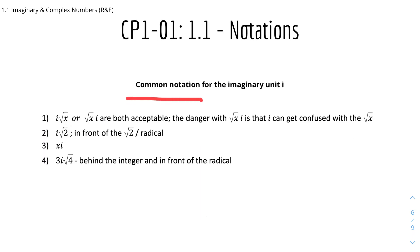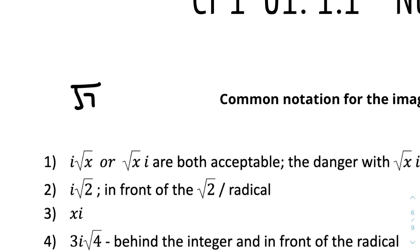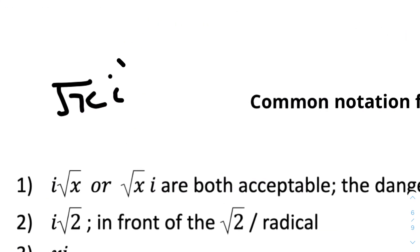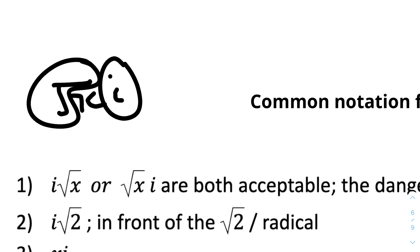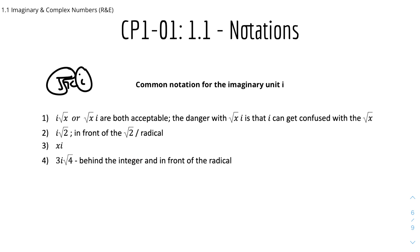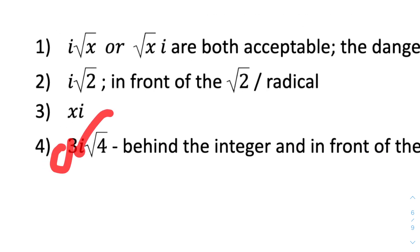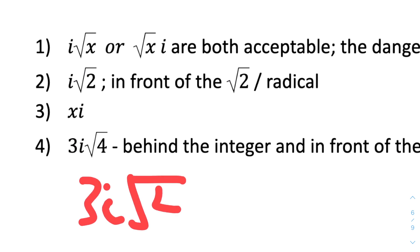Here are some common notation conventions for the imaginary unit i. First, we can write it as i root x or root x i — both are acceptable, but we usually write i root x first to avoid confusing the i with the square root symbol. Second, we write i root 2 by placing the imaginary unit i before the radical symbol. Third, we write xi instead of ix. Fourth, when we have a whole number and a radical, we write the whole number first, like 3, followed by i, and then the radical symbol — as in 3i root 5.